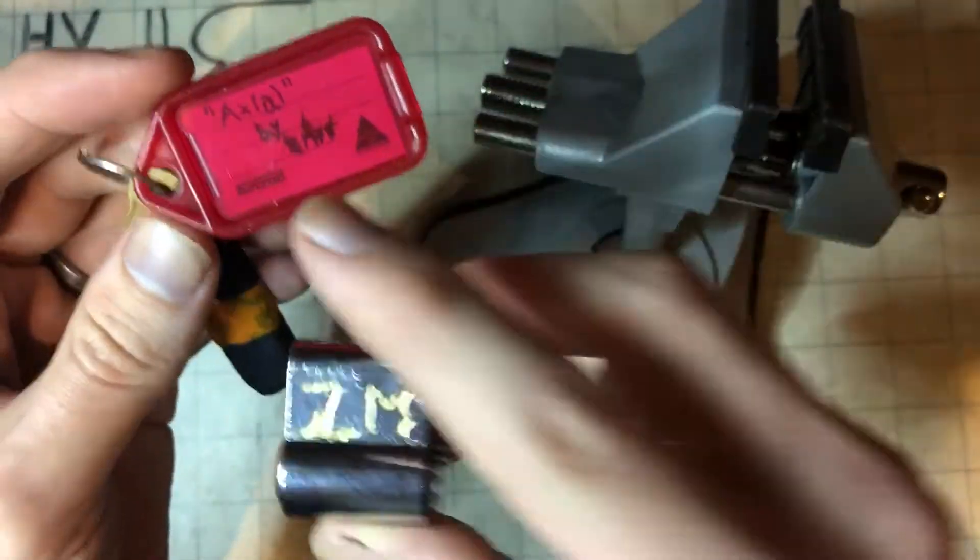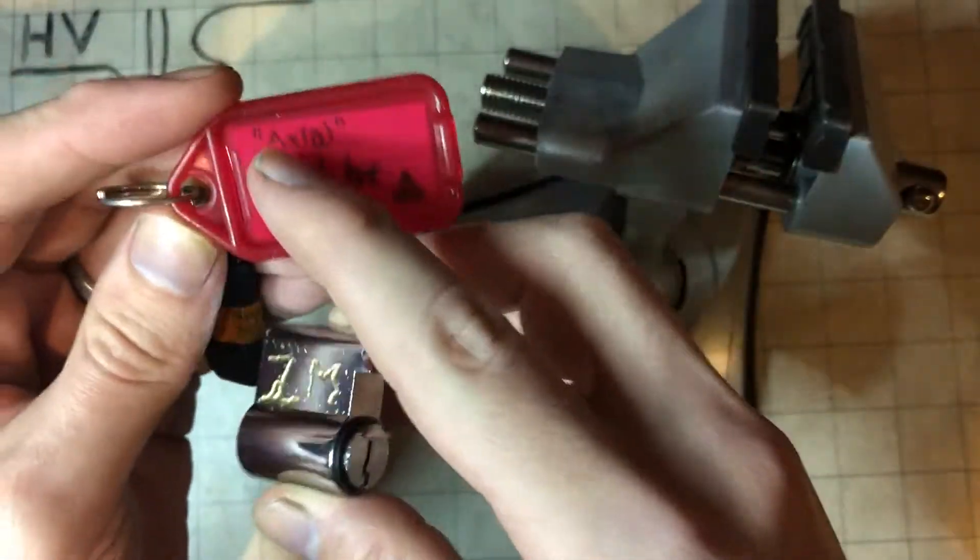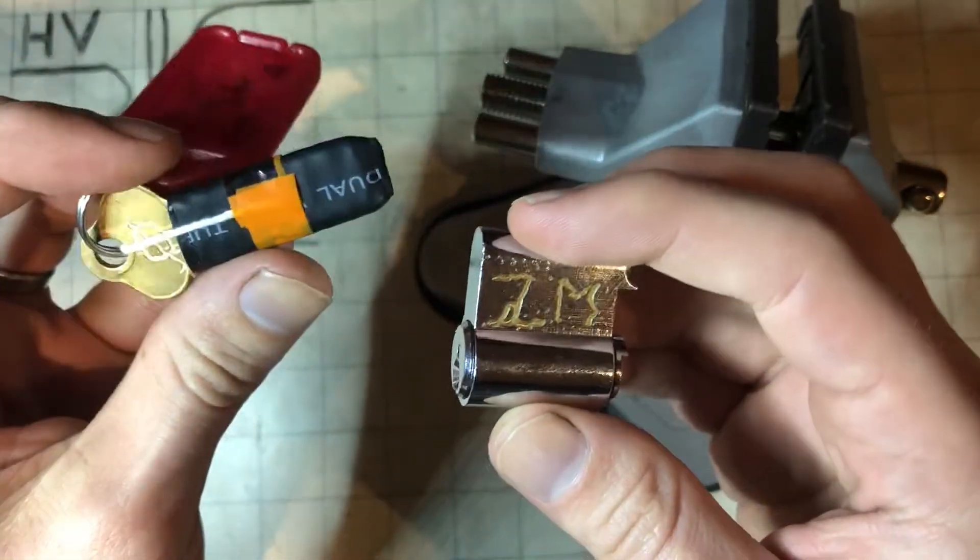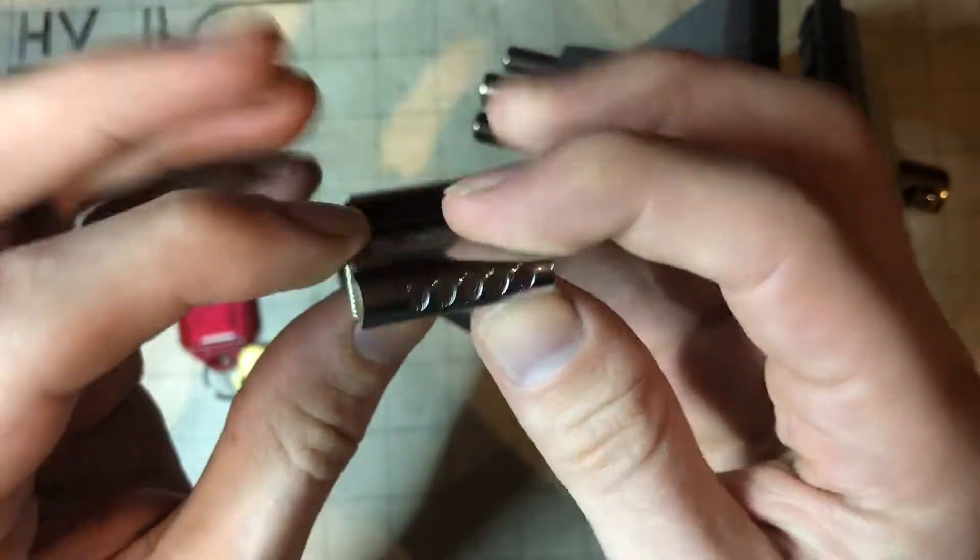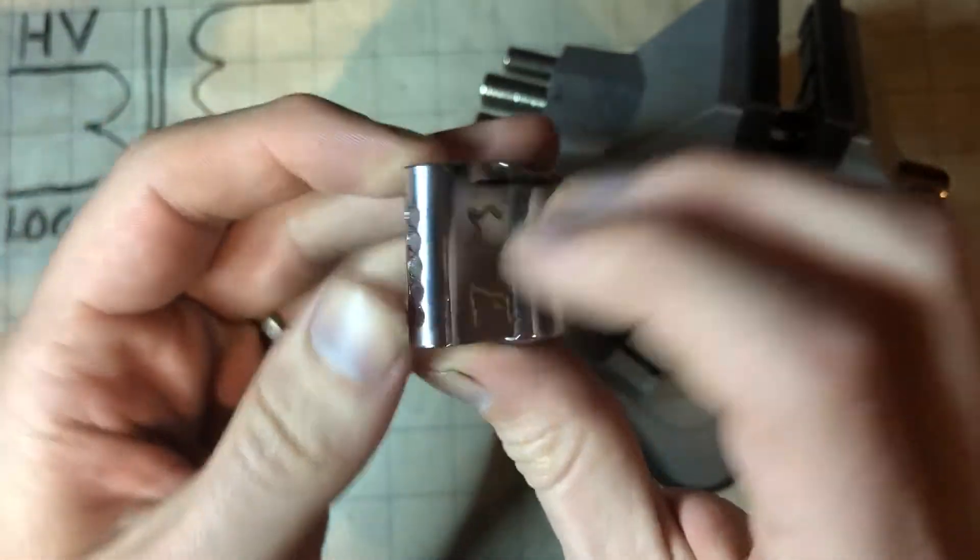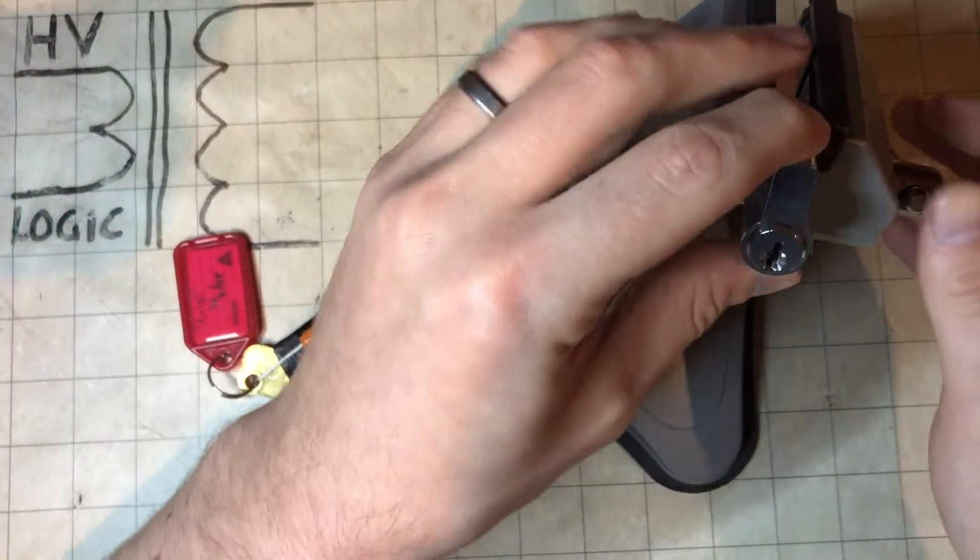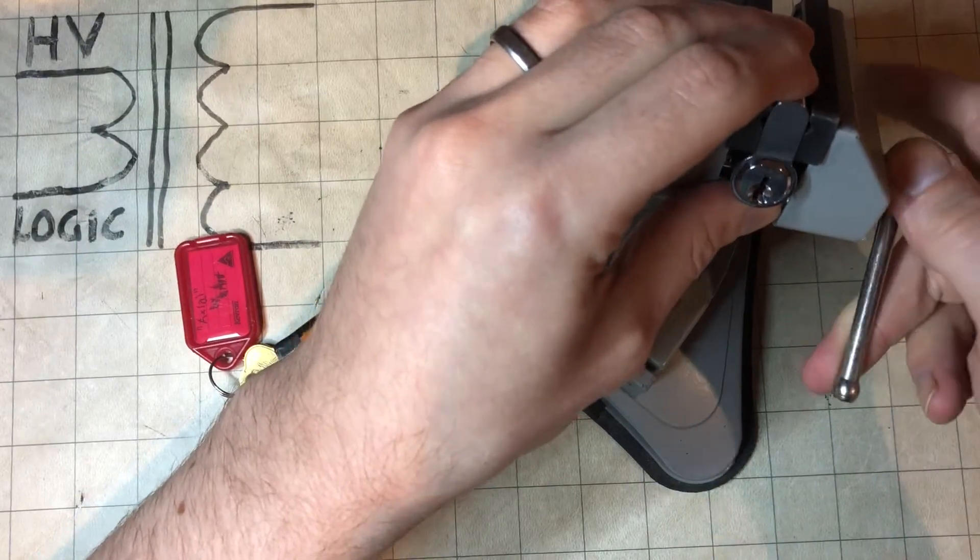Alright, got another challenge lock, another one by ZM78. This one is called Axial. So that's the outside, half euro, it's like five pins. Let's see how it goes.